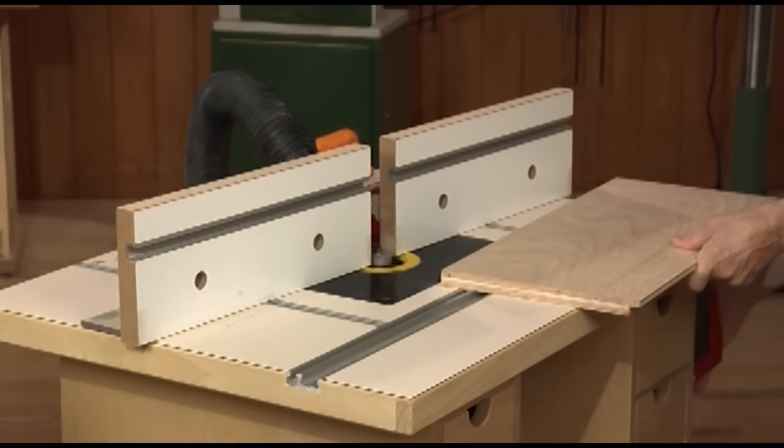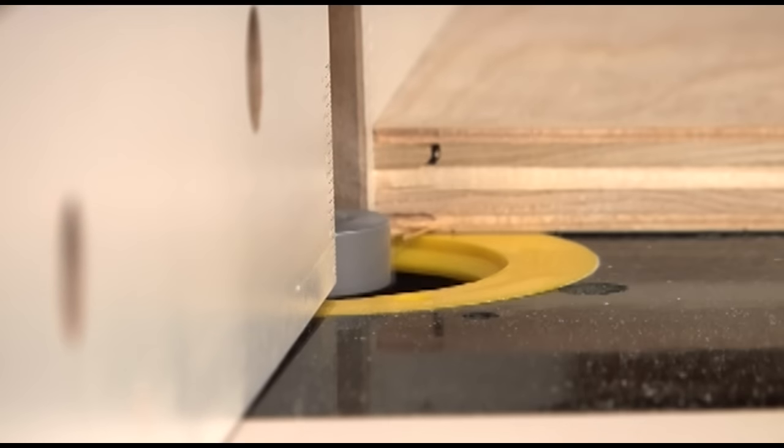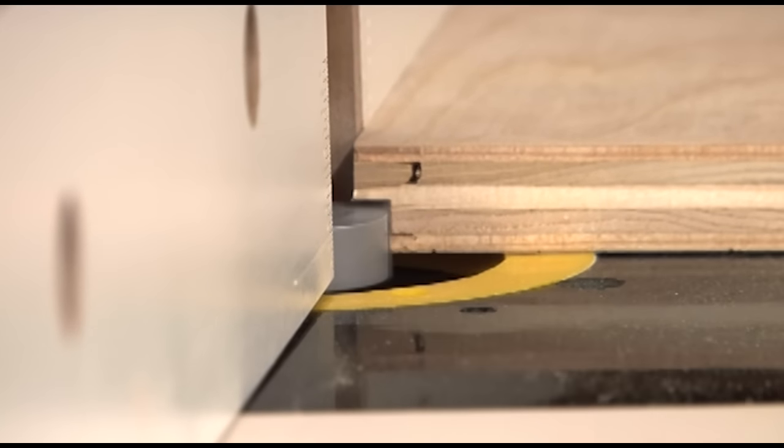You can also cut a rabbet narrower than the rabbeting bit by simply moving the fence to bury more of the bit.